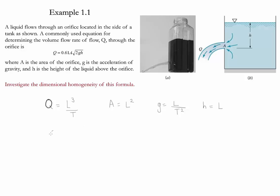So we know that Q has to be equal in terms of units to length cube over T. And if we look at the equation, we have 0.61, which is unitless, multiplied by the area, which is length square, and then we got a square root of 2, unitless, and then we have gravity, L over T square, and we will divide by length.